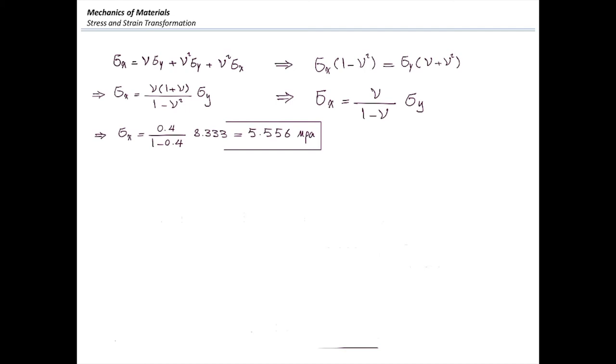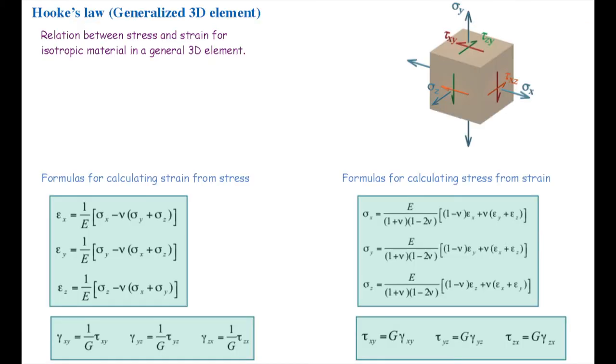Now I'm going to determine how much is the movement of that top plate because of the applied force. We need to again derive another equation. In order to solve that, we need to use again strain equation shown on the left side of this page. Epsilon y is 1 over e multiplied by sigma y minus nu sigma x plus sigma z.